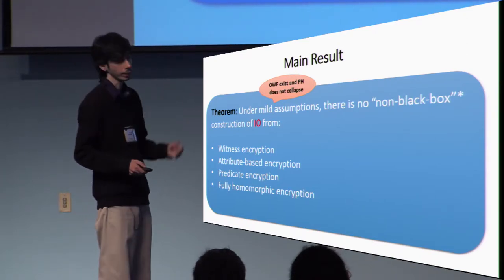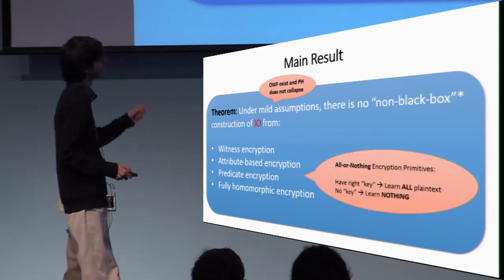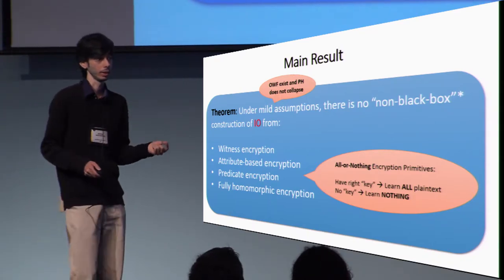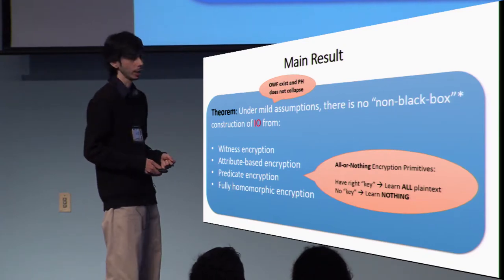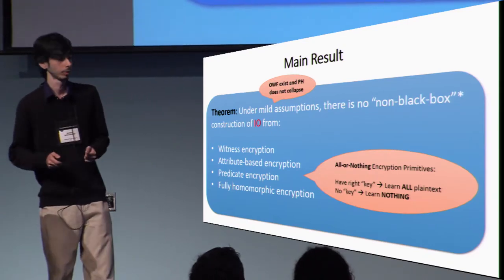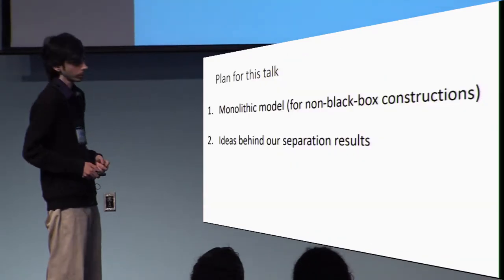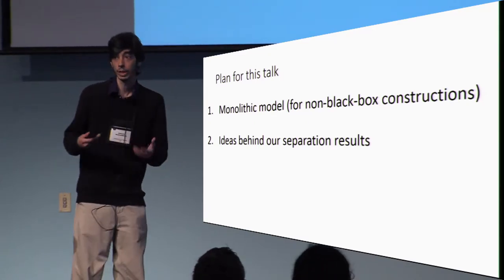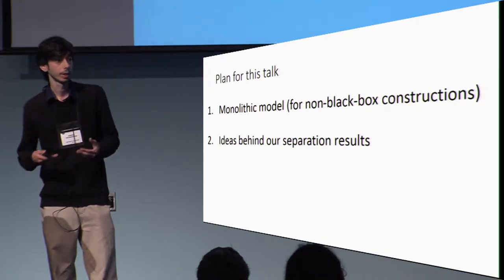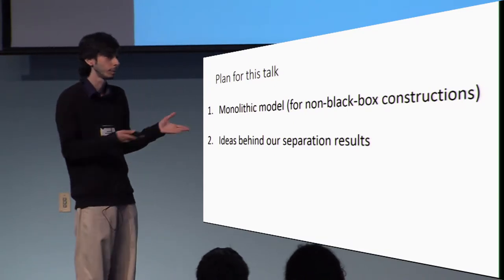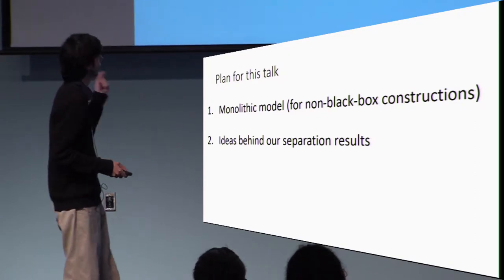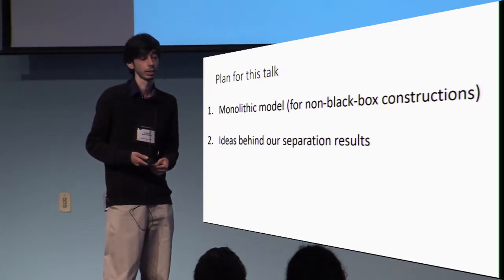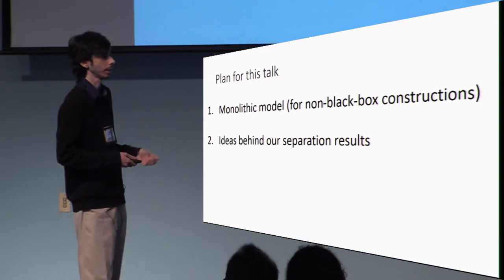This is where the title of the talk becomes relevant: all of these primitives are of an all-or-nothing nature. Meaning that if you have the decryption key, you can decrypt the ciphertext and get back the entire plaintext; otherwise, if you don't have the decryption key, you learn nothing. The plan for the rest of the talk is: first, I'll describe the blackbox model and our proposed monolithic model, which captures the non-blackbox techniques used to construct I.O. from these primitives. Second, I'll describe the high-level ideas behind our separation results, leveraging the all-or-nothing property.